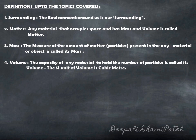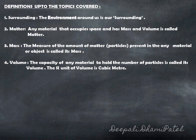To summarize today's lecture, let us go through the definitions we studied in this chapter till now. Surrounding: the environment around us is our surrounding. Matter: any material that occupies space and has mass and volume is called matter. Mass: the measure of amount of matter or particle present in any material or object is called its mass. Don't forget — mass and weight are two different things. So now, whenever someone asks what is your weight, you are going to correct them and say it is not my weight, it is my mass. Volume: the capacity of any material to hold the number of particles is called its volume. The SI unit of volume is cubic meter. Thank you for today.